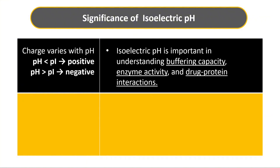The physiological significance of isoelectric pH is based on the fact that the charge on a molecule varies with pH. If the environmental pH is less than the isoelectric pH, the charge is positive; if greater, the charge is negative. On this basis, isoelectric pH is important in understanding buffering capacity, enzyme activity, and drug-protein interactions.